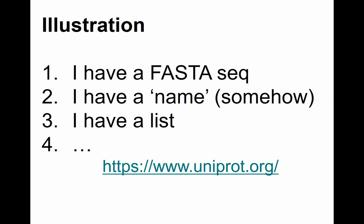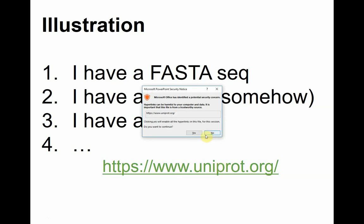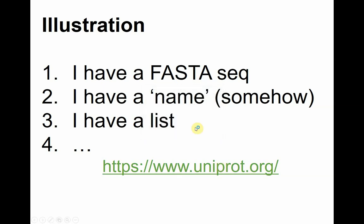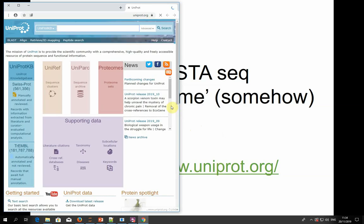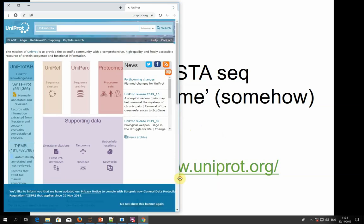Let's say I have a FASTA file, or a name like 'kinase of the mitochondria,' or a list of genes. Let's go to the UniProt interface. This is UniProt - this is the entry point. I want to make sure we're okay with a few things to illustrate.